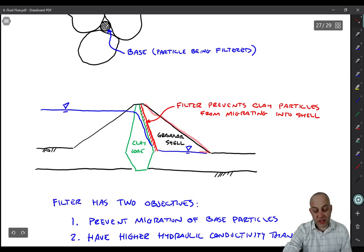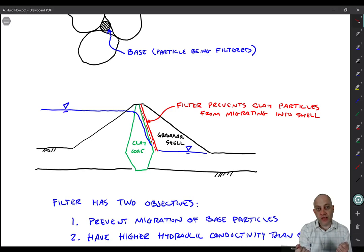So it's a little complicated but the definition of filter and base is based on which particle size is coarser. The coarser one is always the filter and the finer one is always the base. So a so-called filter layer can serve as a filter but then it can also serve as a base as we continue moving to the right.